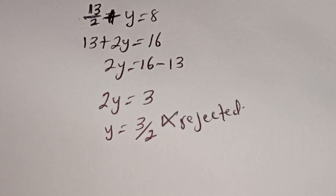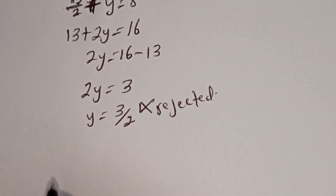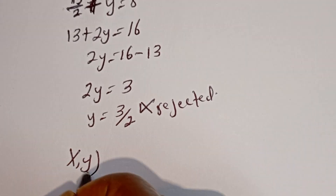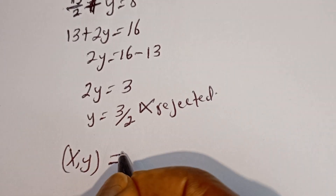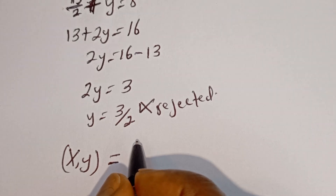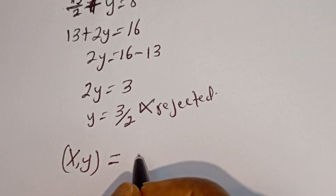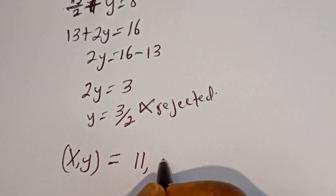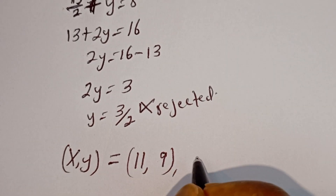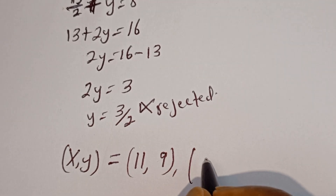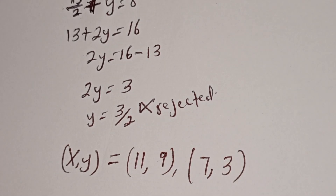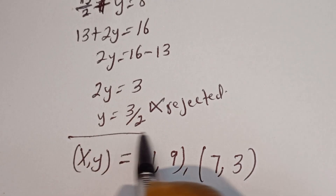Therefore, our final answers are: the pair (x, y) equals (11, 9), and the pair (x, y) equals (7, 3). These are the values of x and y that satisfy the equation.